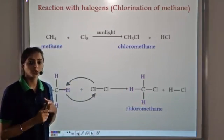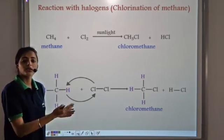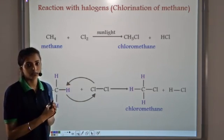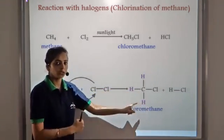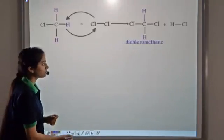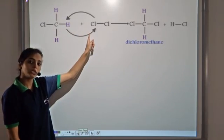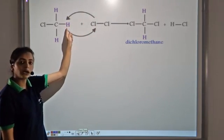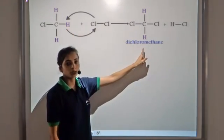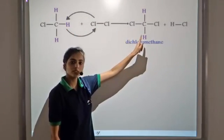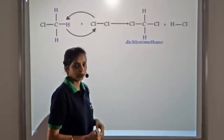Since alkanes have only single covalent bonds, the hydrogen atoms can be replaced by another atom. This chloromethane can continue to react with chlorine — again one chlorine atom replaces one hydrogen atom — so we get dichloromethane, that is two chlorines.